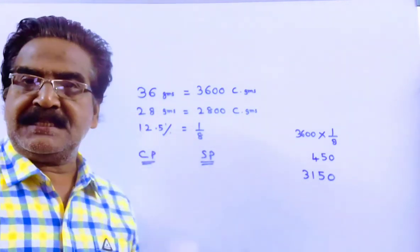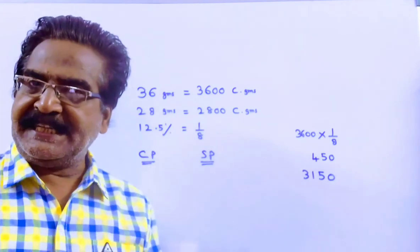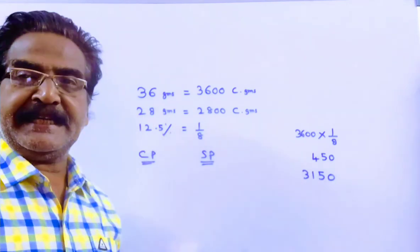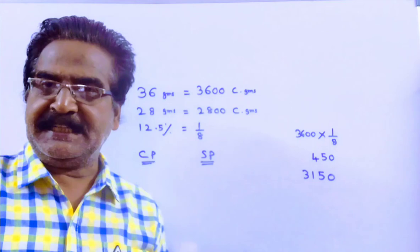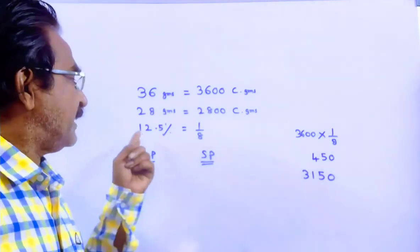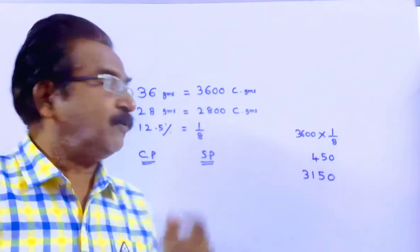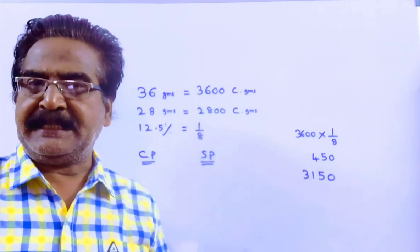See friends, 36 grams is equal to 3600 centigrams and 28 grams is equal to 2800 centigrams. And one more thing friends, 12.5% is equal to 1 by 8. Its fractional value is 1 by 8.